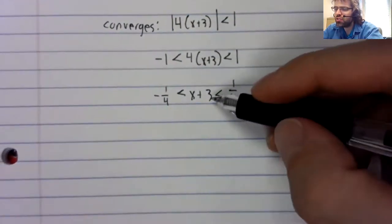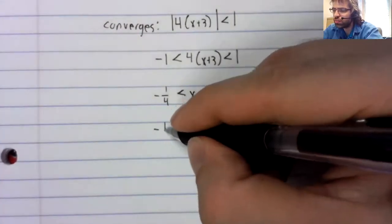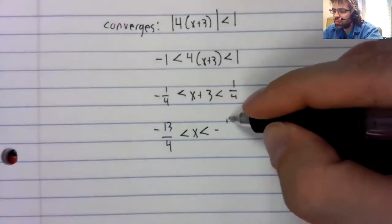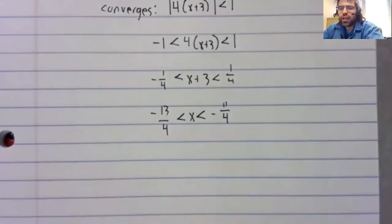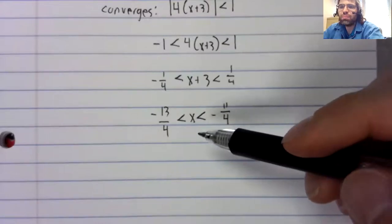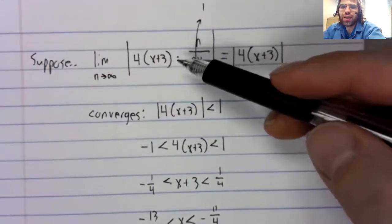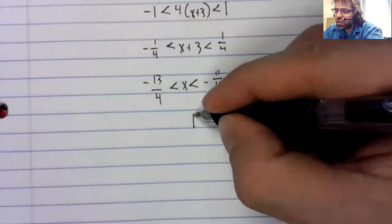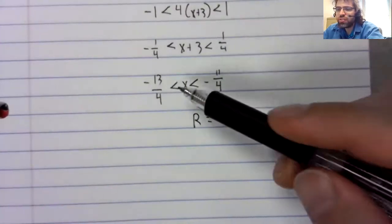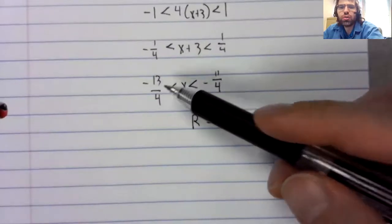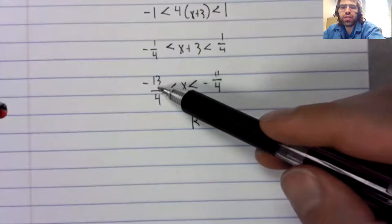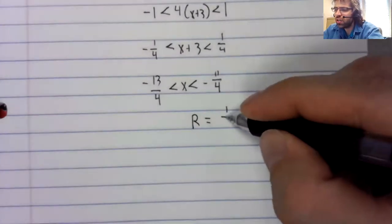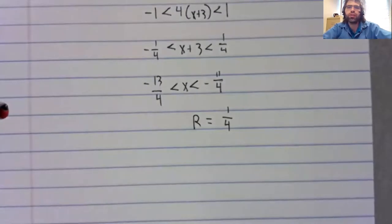3 is 12 fourths. And this is where the hypothetical series that gave us this converges. And the radius of convergence is half the distance from here to here. So from negative 13 fourths to 11 fourths is 2 fourths. The radius of convergence would be 1 fourth.